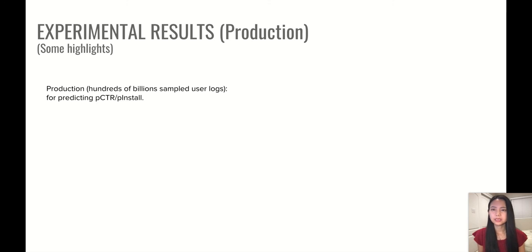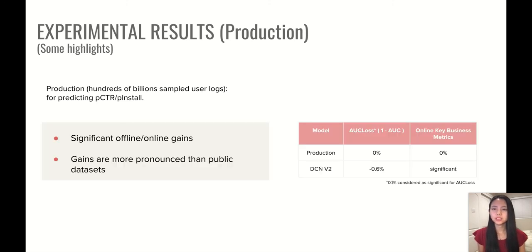And for the production data, we have also achieved significant gains for both offline metrics and also online key business metrics. And the gains here actually much more pronounced than those from the public datasets. And this is probably because the production data is at much larger scale and has more complex distributions than the public ones.